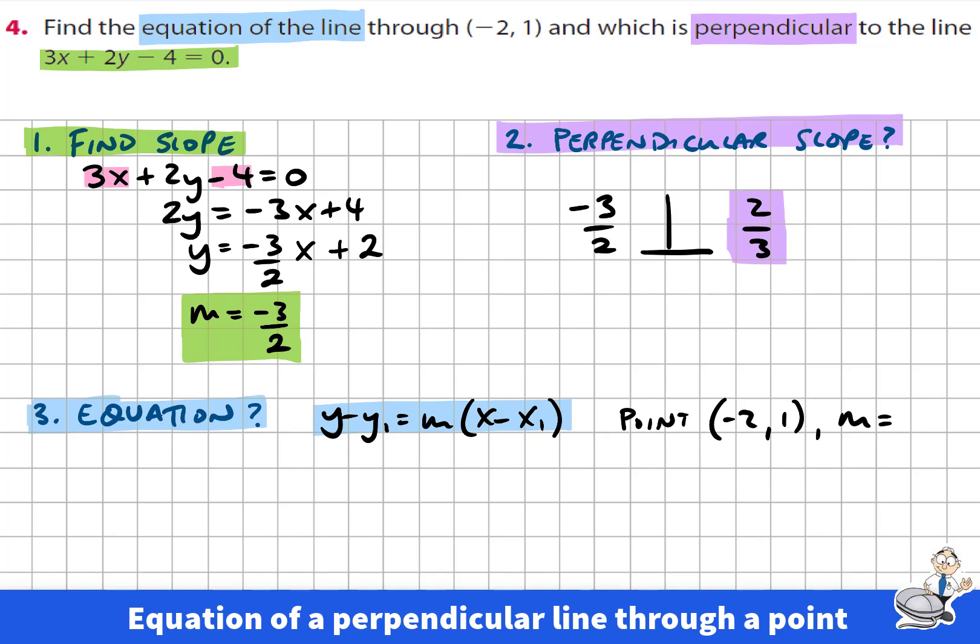And this time, which slope am I using? Is it the negative 3 over 2? Or is it the 2 over 3? 2 over 3. The 2 over 3. Because this one is perpendicular. So that's the information I'm going to put into this line. So now I have y minus y1, which is minus 1, is equal to m, which is 2 over 3, times x minus x1, which is minus negative 2, which is going to be positive 2.